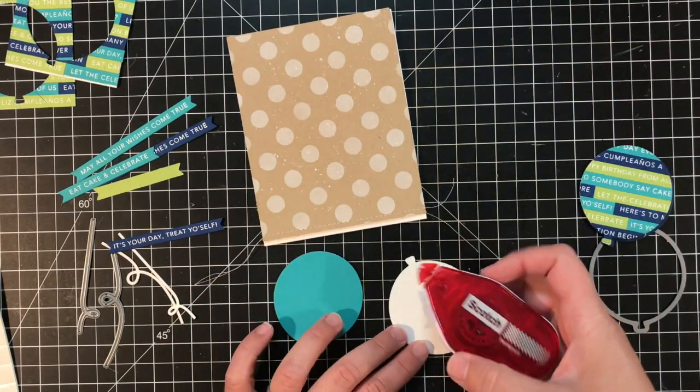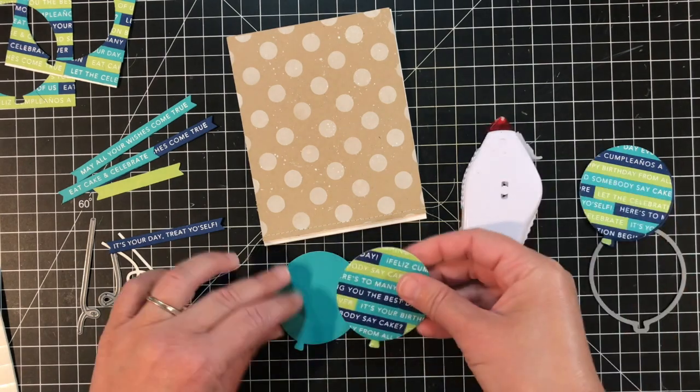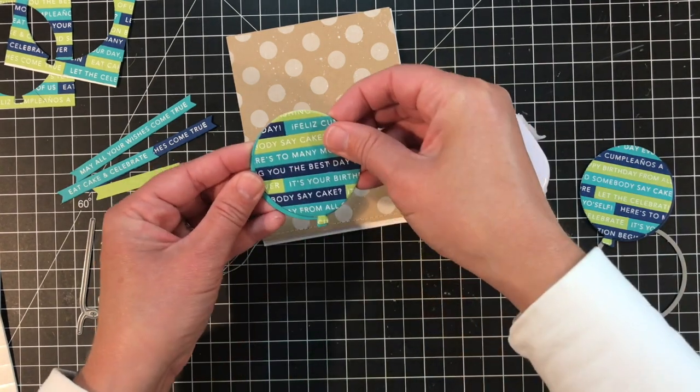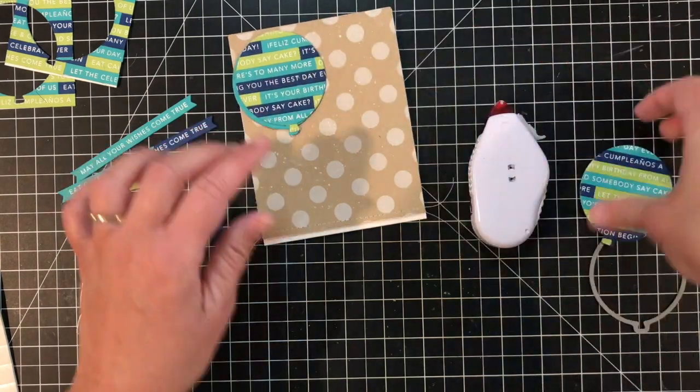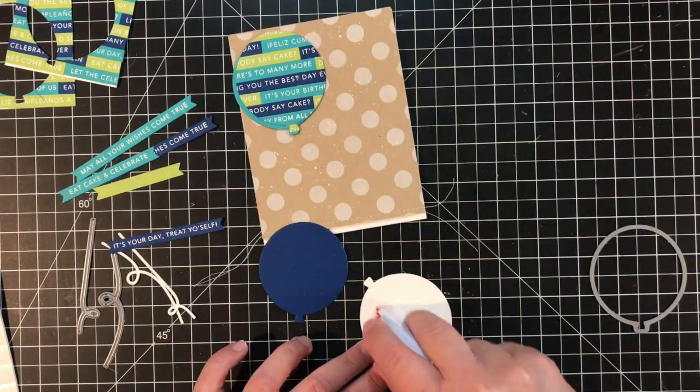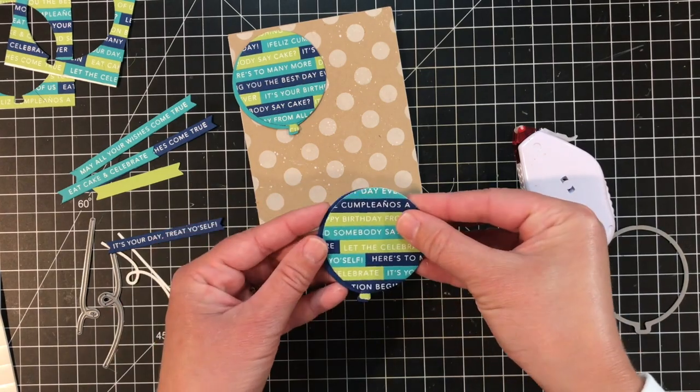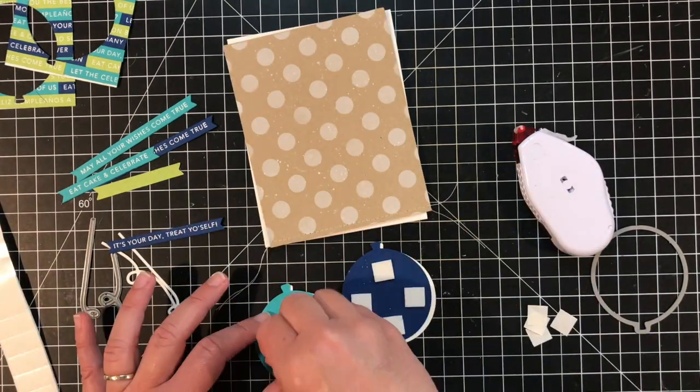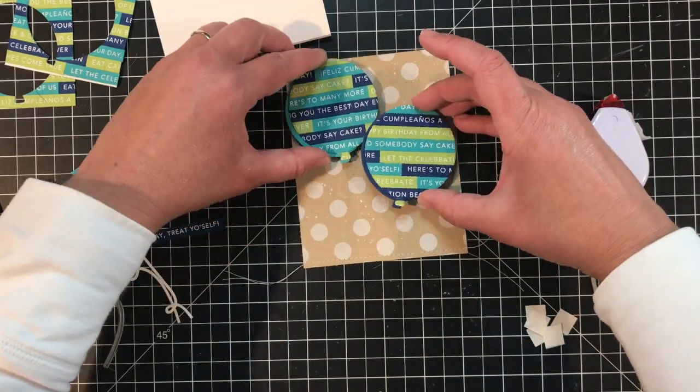Before I add my simple strips balloons to my card front I die cut an additional balloon with a solid piece of cardstock in blue raspberry and blueberry cardstock colors and I'm just offsetting those behind the balloons, the simple strips balloons just to give them a little bit more definition on the card front. I'll use foam squares to attach the balloons to the card front to pop them up just a bit from the background.